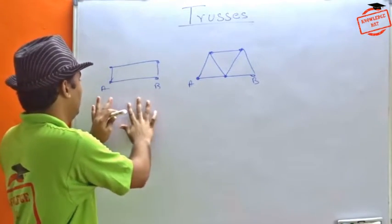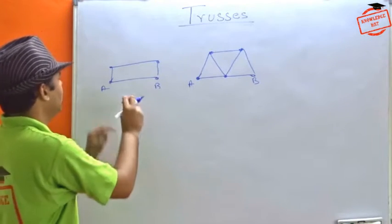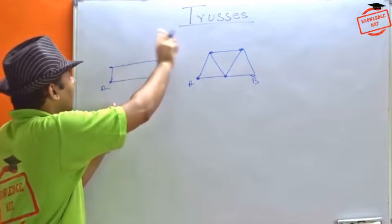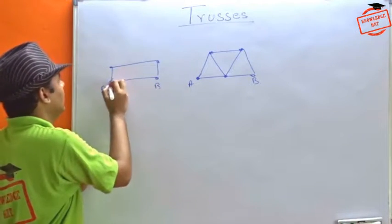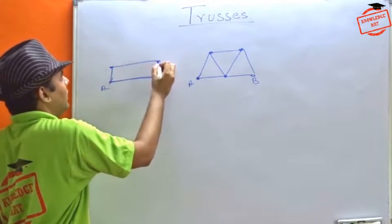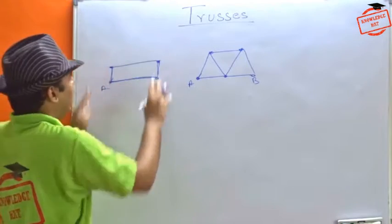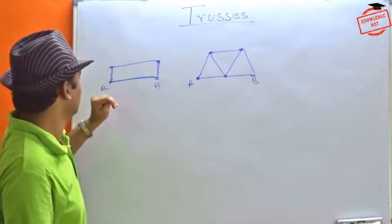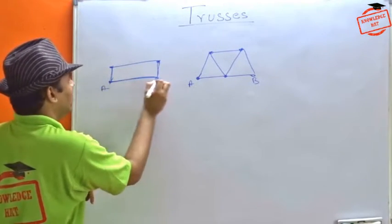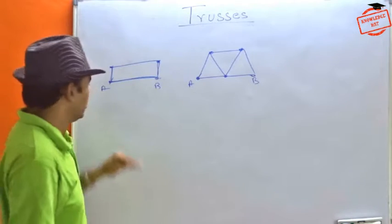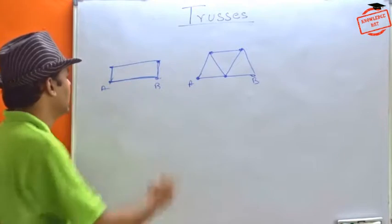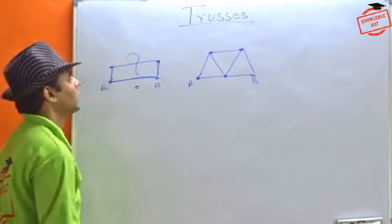Now we will understand it much better here. Suppose we have point A and point B and we want to construct a bridge over it. We can directly use a single plank here and support it with this rectangular kind of structure. But in this case, the forces of this entire load is acting only at two points. So the stability or the durability of this bridge is under question mark, a very big question mark.